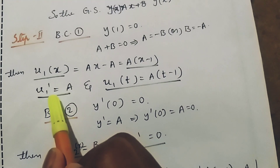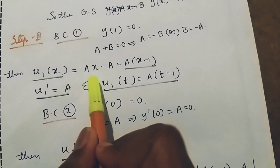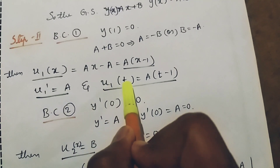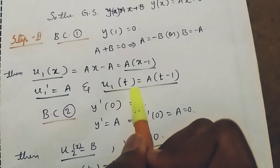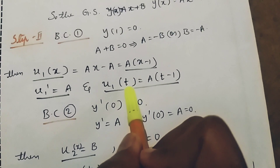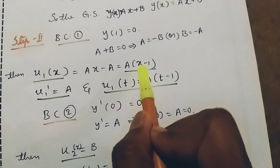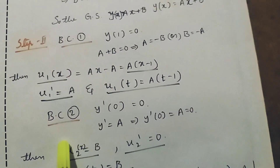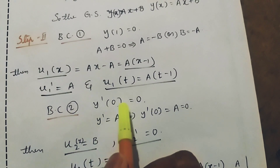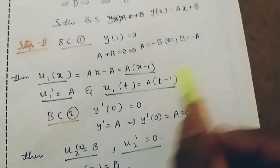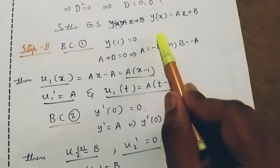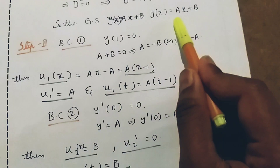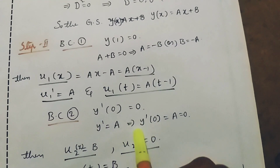Taking the derivative, u₁ dash of x equal to a. Substituting t in the place of x, u₁ of t equal to a(t minus 1). By applying the second boundary condition y dash of zero equal to zero: the derivative of y of x is y dash of x equal to a.